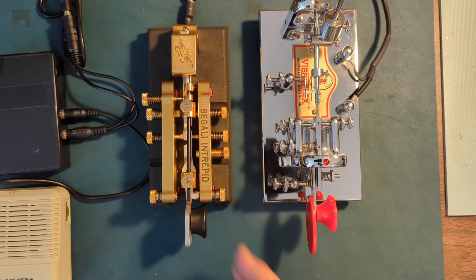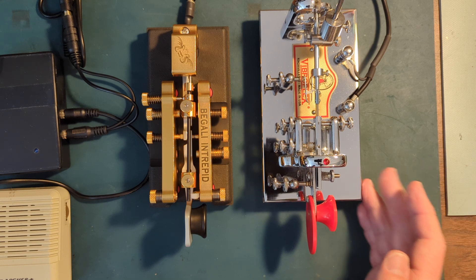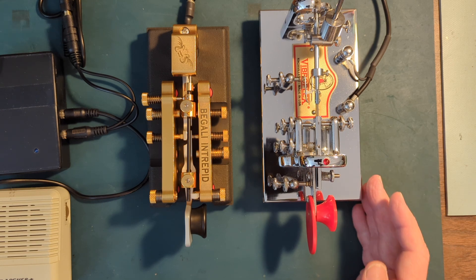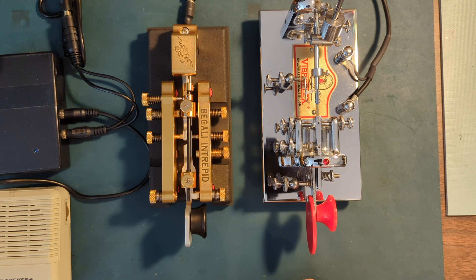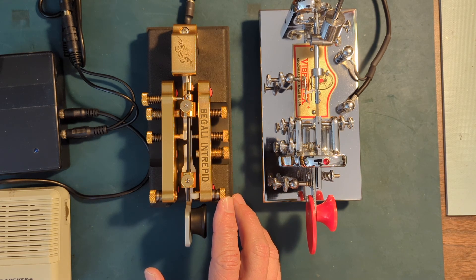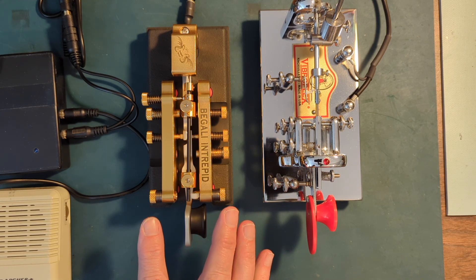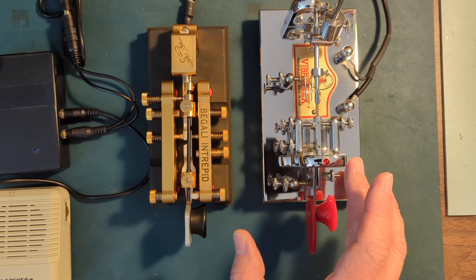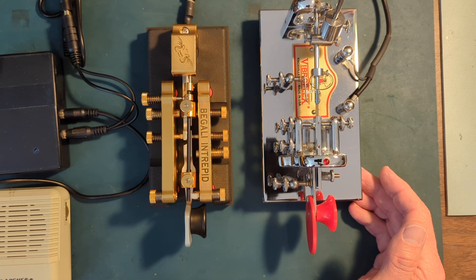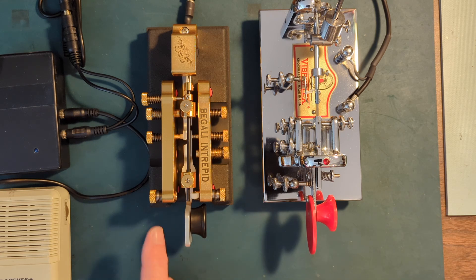Let's look at the Intrepid versus a standard Vibroplex bug. Well, this is a deluxe Vibroplex bug. It's chrome-plated. So the adjustments are pretty much the same. The only adjustment that the Pagali bug has that is missing on a Vibroplex bug is the DIT dwell damper.